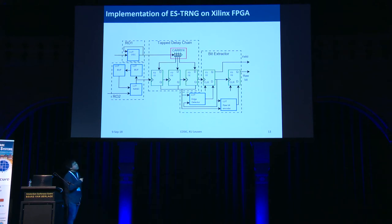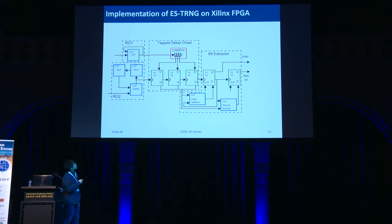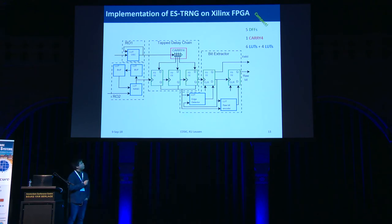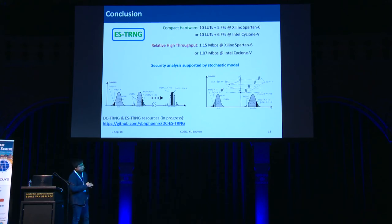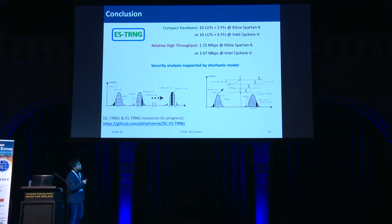On Xilinx FPGA, the ESTRNG uses lookup tables for free-running oscillators, edge detectors, and the raw bit encoder, and uses a carry-4 primitive as the tap-delay chain. In total, it uses five flip-flops, one carry-4, and ten lookup tables — showing that ESTRNG is quite compact. As a conclusion, ESTRNG has compact hardware implementation on both Xilinx and Intel FPGA, achieves around one megabit per second throughput on both platforms, and its security analysis is supported by the stochastic model. Details of the stochastic model and comparison with other TRNGs are available in the paper.